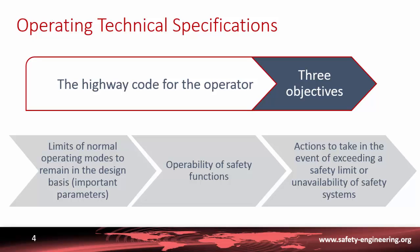The third objective is to define the actions to take in the event of exceeding a safety limit or safety parameters, or if there is some unavailability of a safety system. In that case, if a system is discovered to be unavailable, there is a grace period — typically between one hour, several hours, or sometimes days depending on the type — and if the safety system is not restored to normal operation within this grace period, the reactor should be shut down.